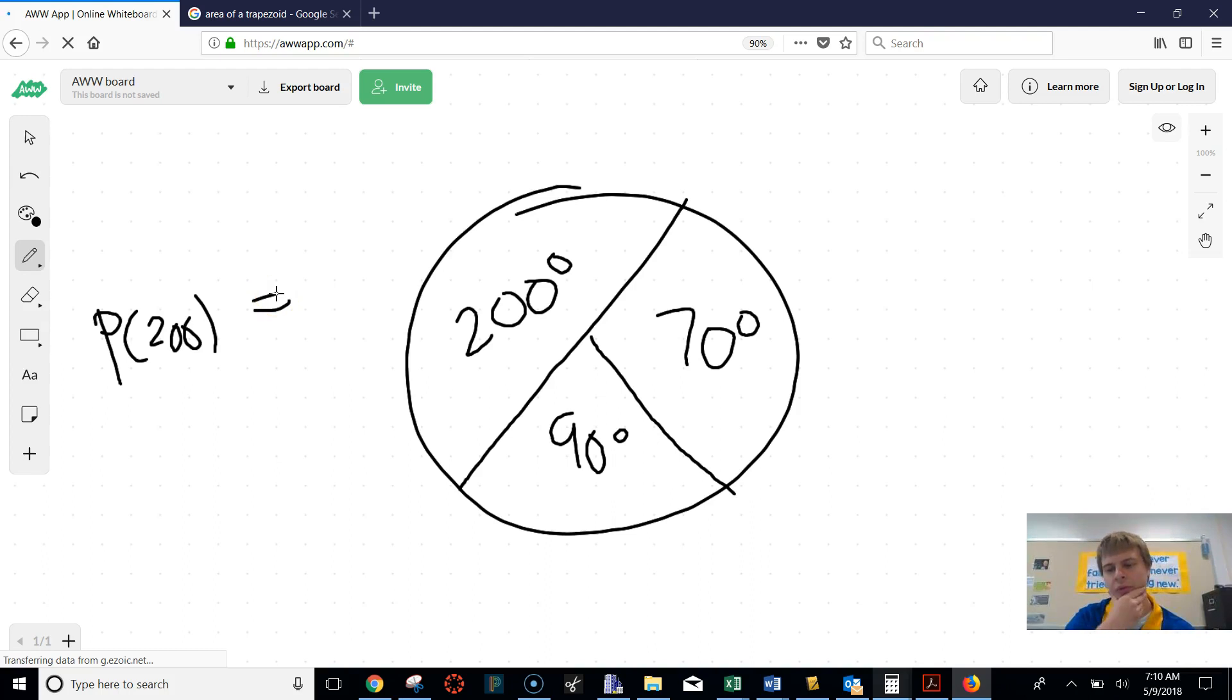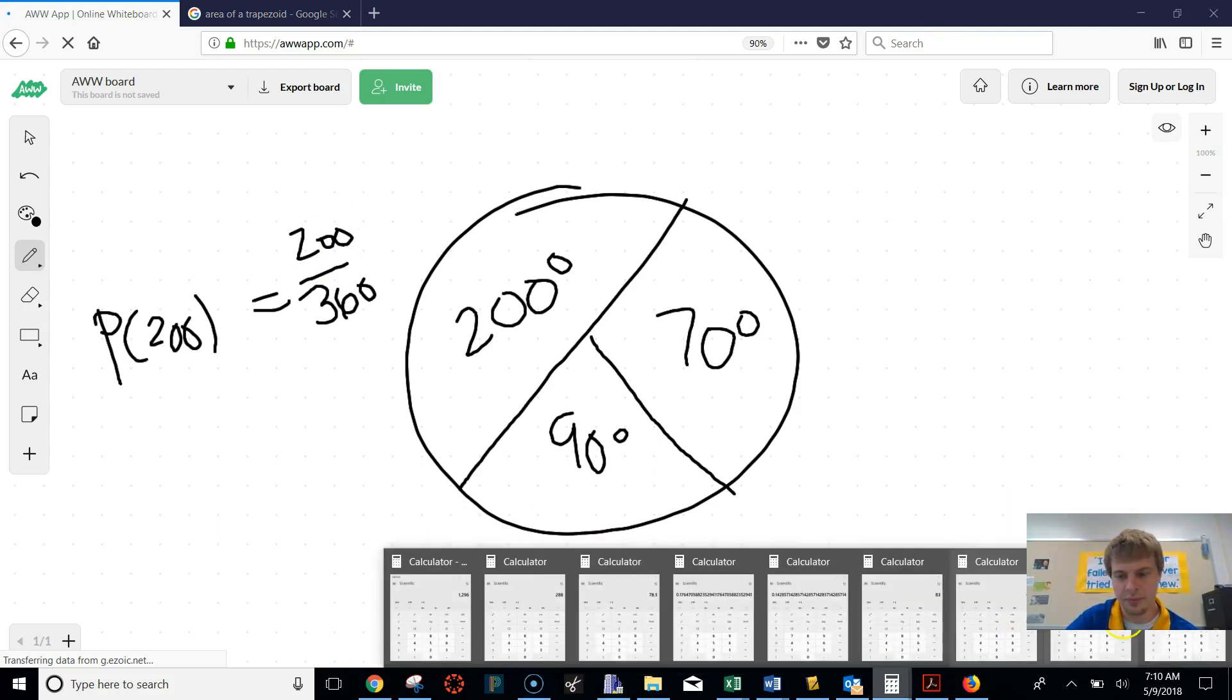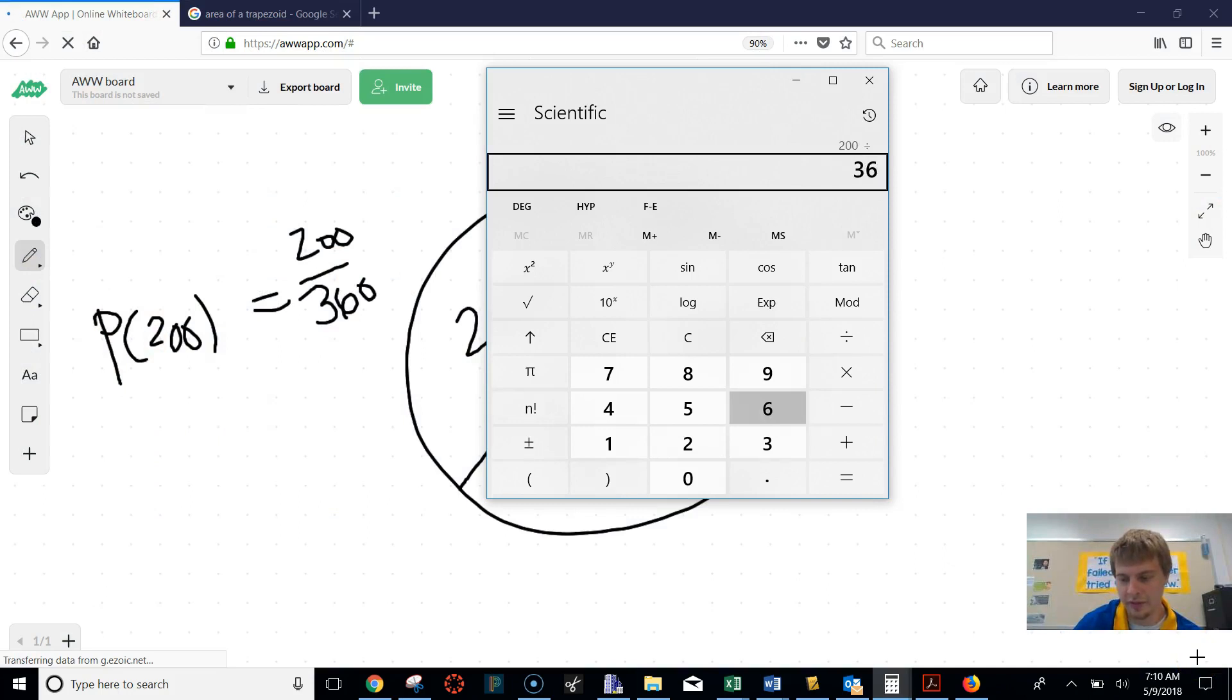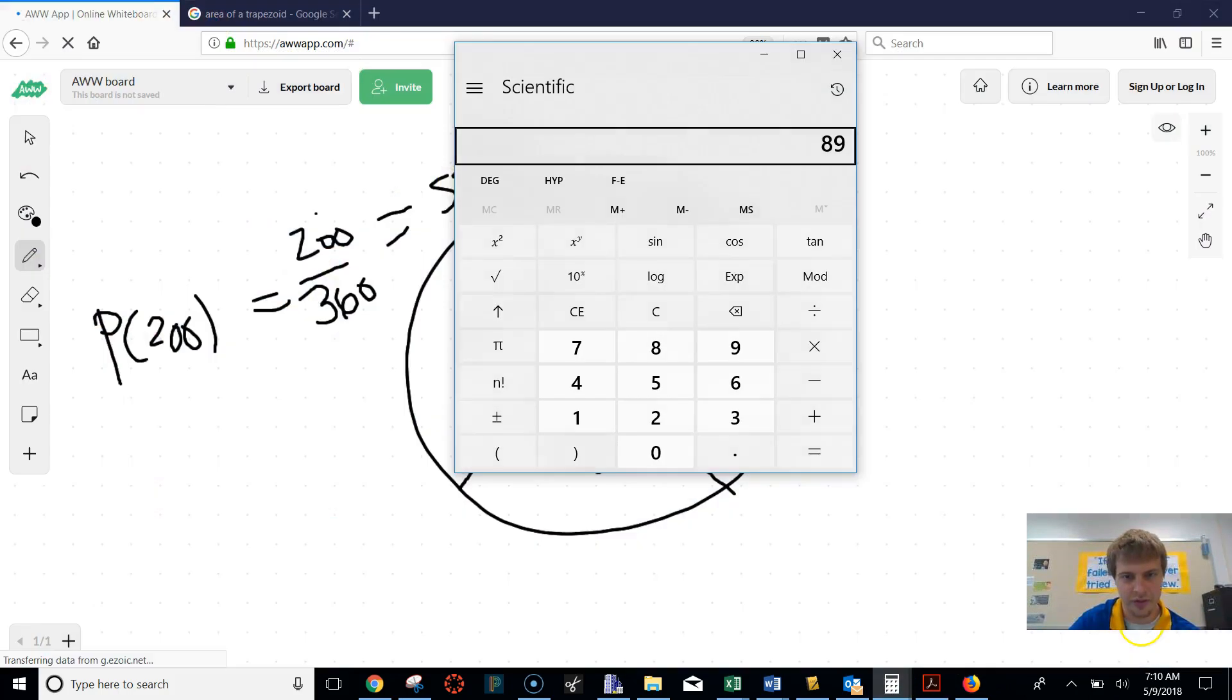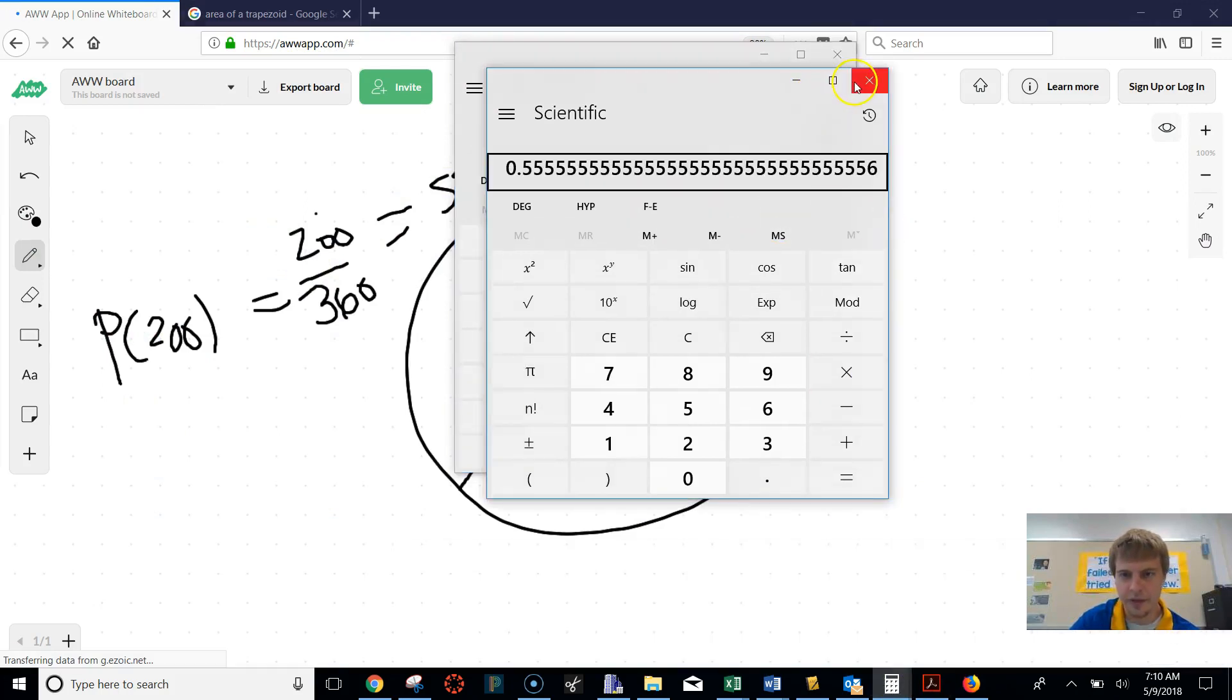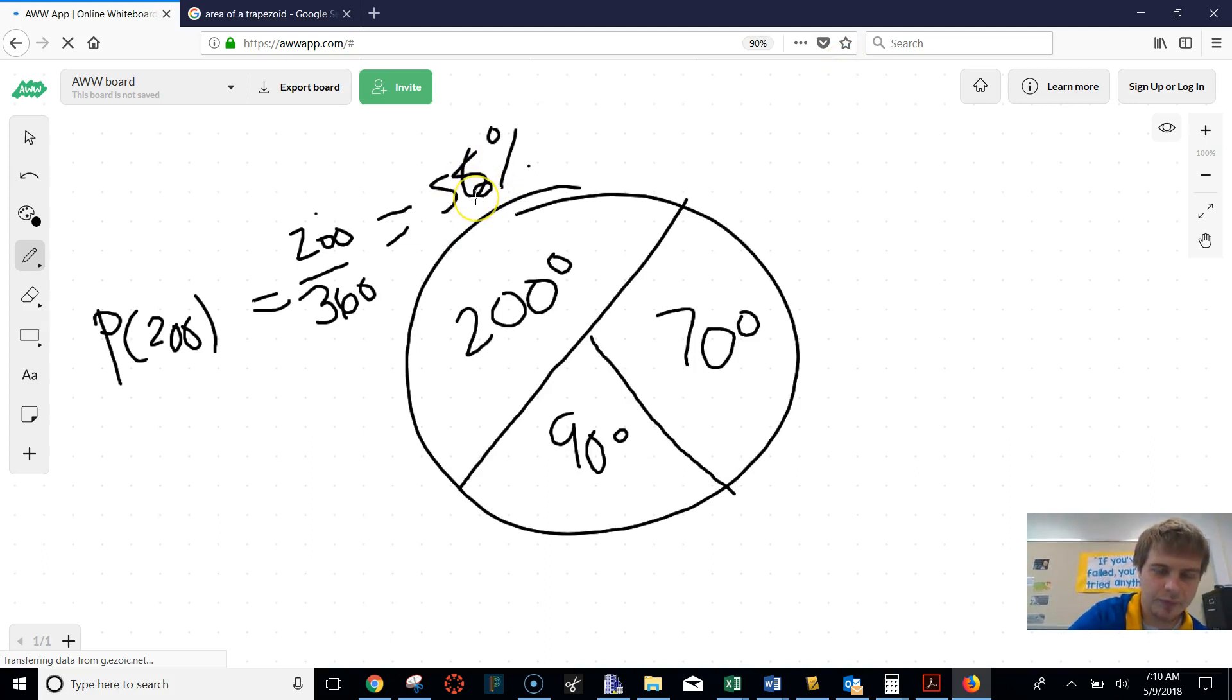So again, you want to do your total over what percent you have. So this would be, well, how many degrees are in a circle? Well, if you added this all up, there should be 360 degrees in a circle. And we've hit, we're trying to hit the 200. So that would be 200 degrees of it. So that percentage would just be 200 divided by 360, which is 55%. And then you would do, well, probably 56%. I should have rounded that up, right? What was that one? Yeah, 56%. So, and then you do the same thing for 70 and the same thing for 90.